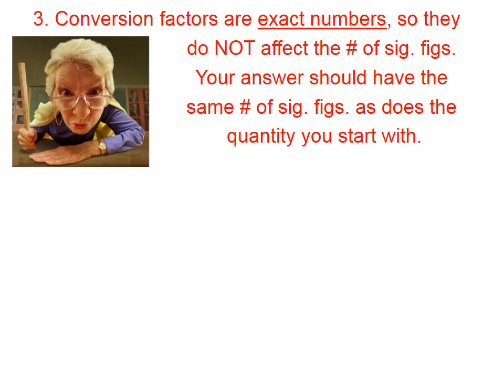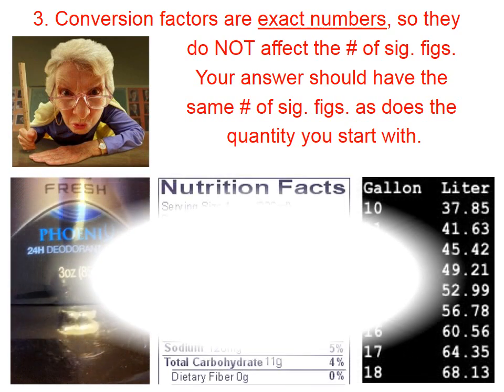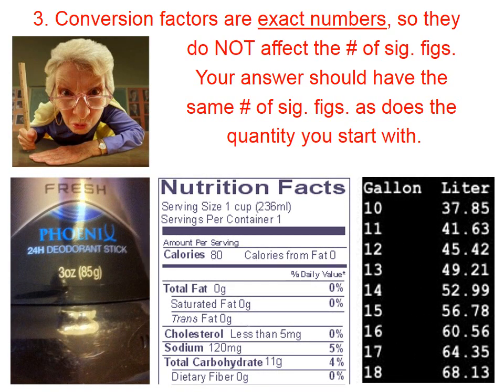Whenever we use a conversion factor to convert one unit into a different unit, we need to remember that conversion factors are exact numbers, so they do not affect the number of sig figs. Whenever you do a conversion, your answer should have the same number of sig figs as does the quantity you start with. Product manufacturers don't often do that. You can see here in the lower left: three ounces, they say, is 85 grams.